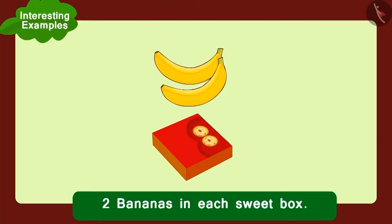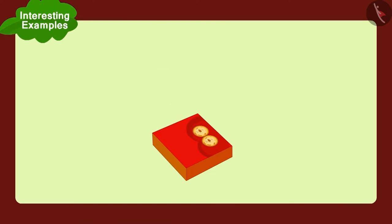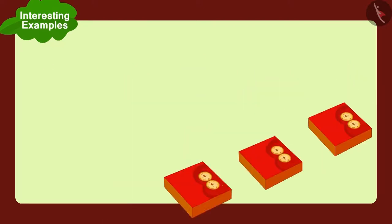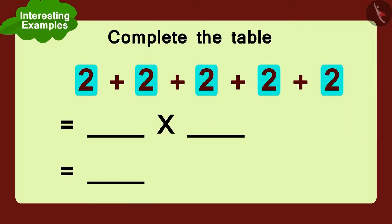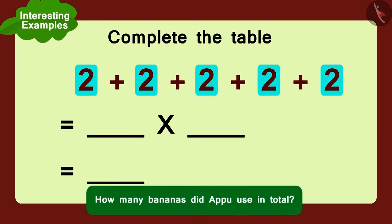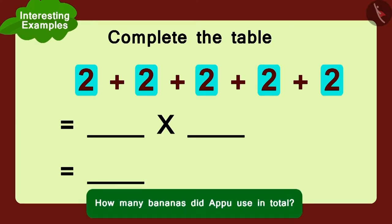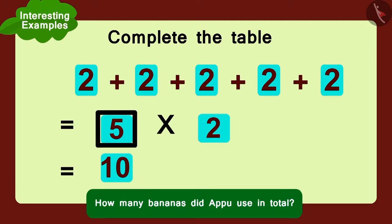He made five such boxes. Can you complete this table and tell how many bananas Appu used in total? This is absolutely correct. Appu used five multiplied by two, that is ten bananas.